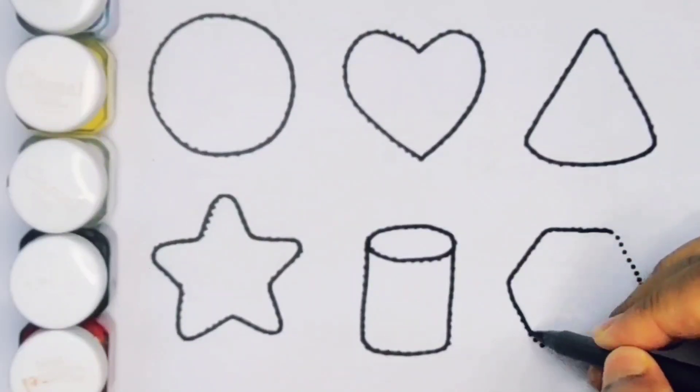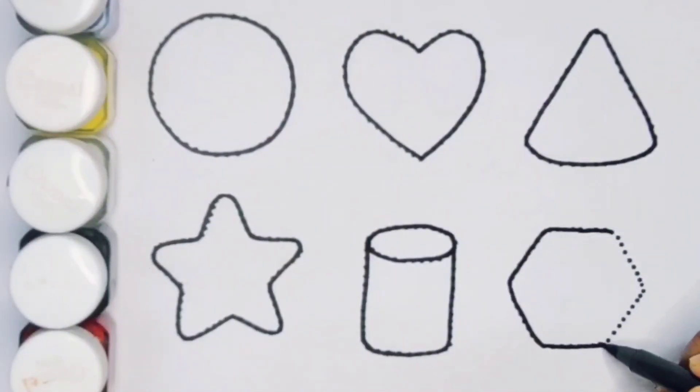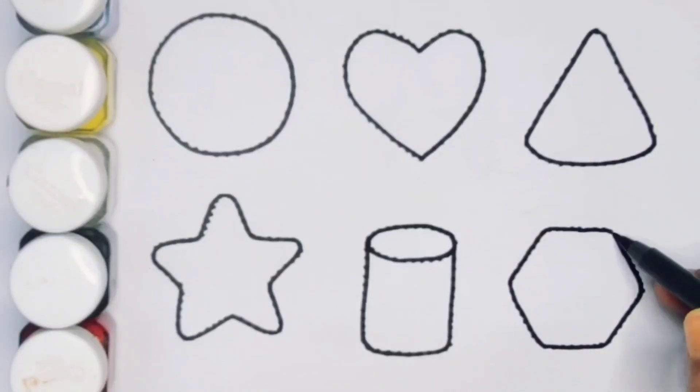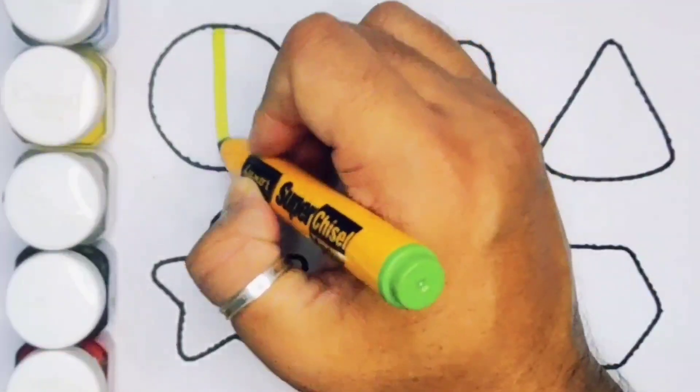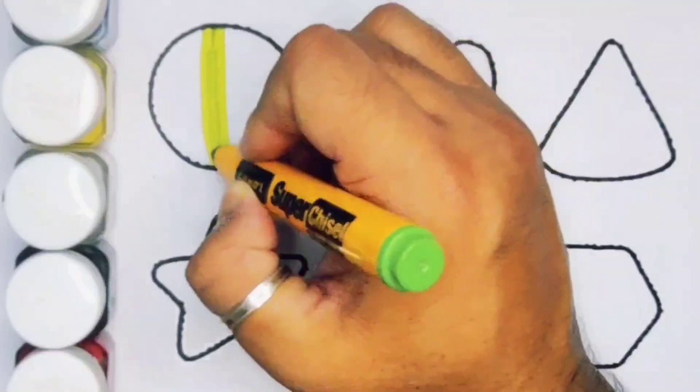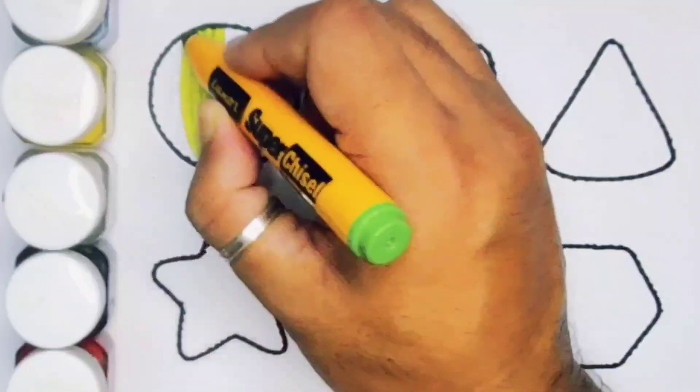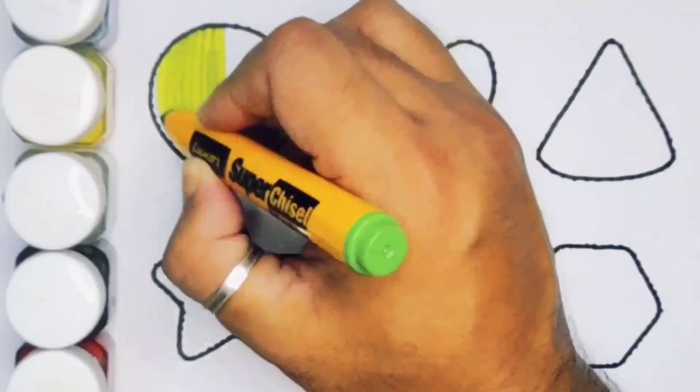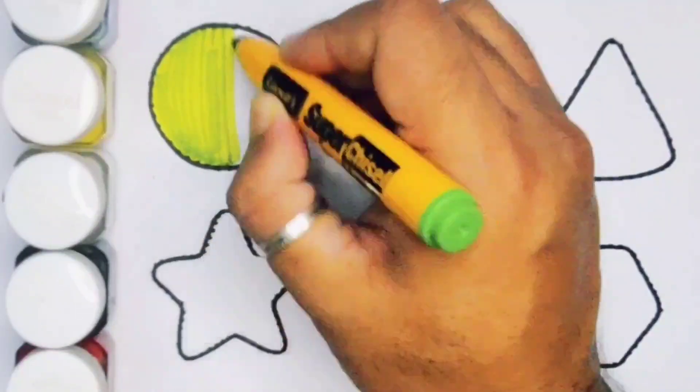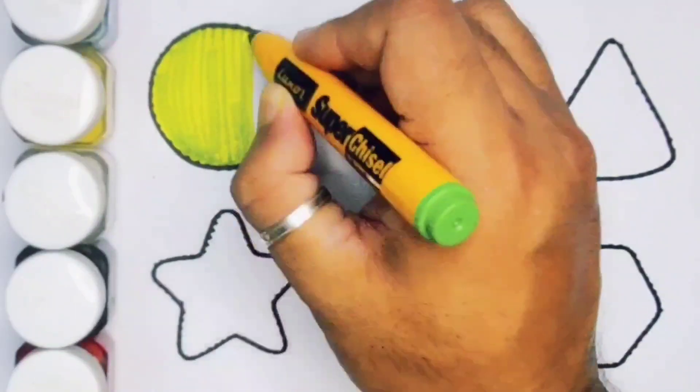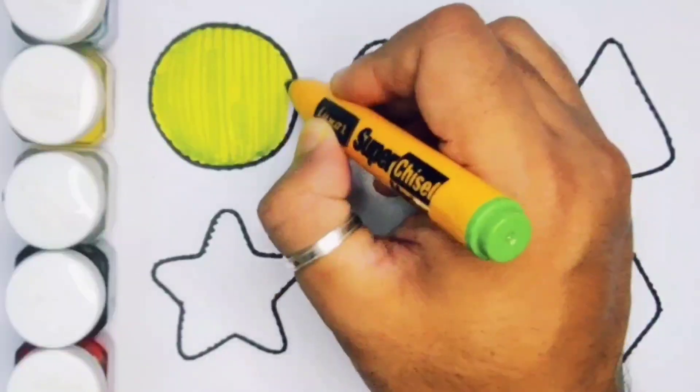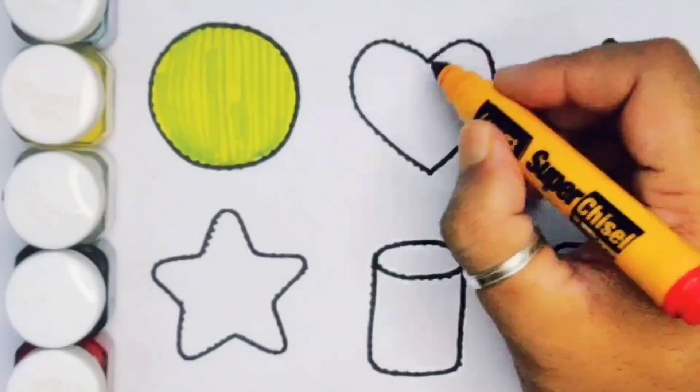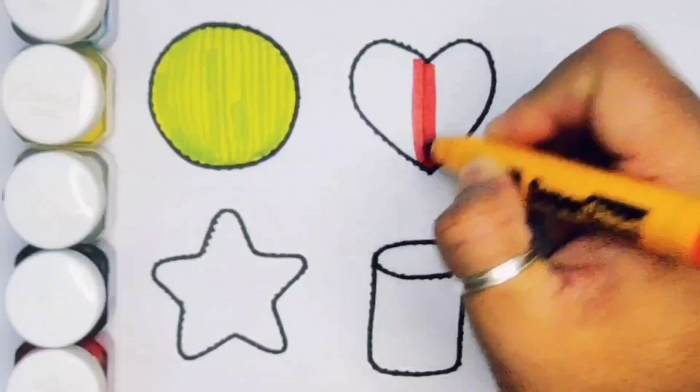Now we are going to put the color. Green color, Circle. Next Red color, Heart.